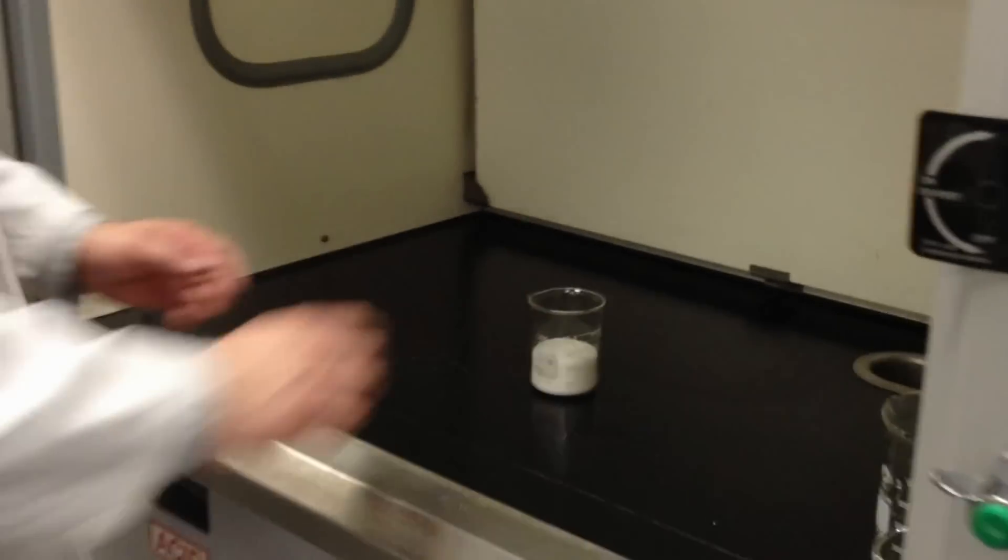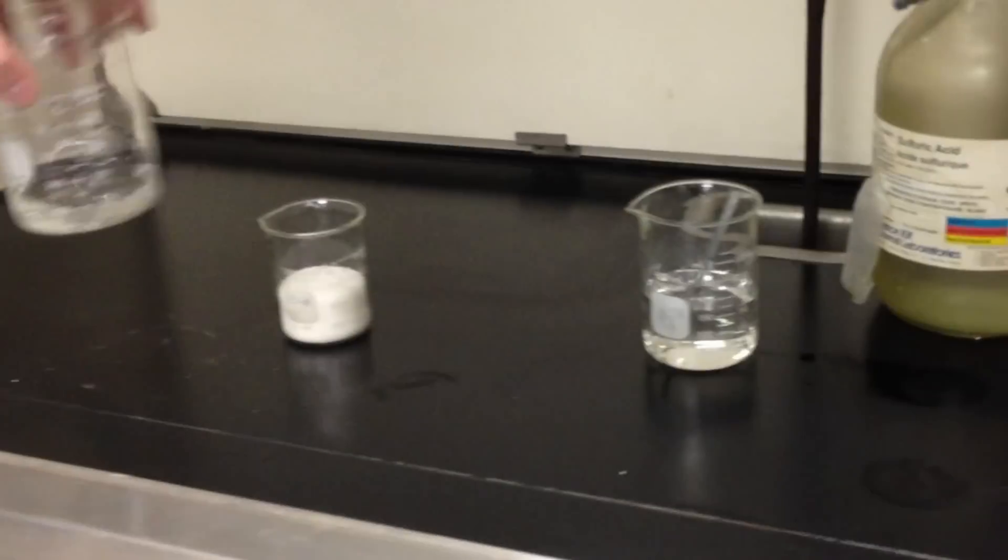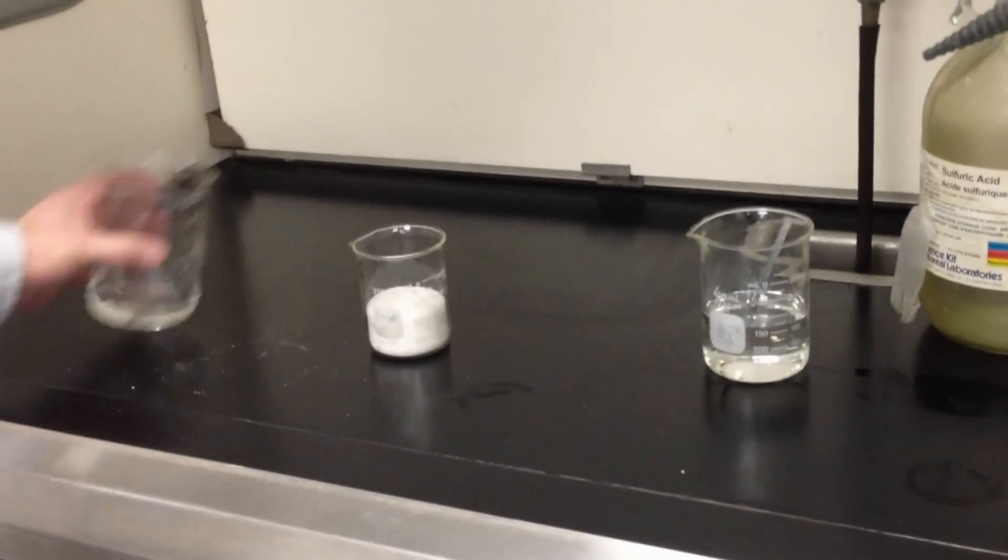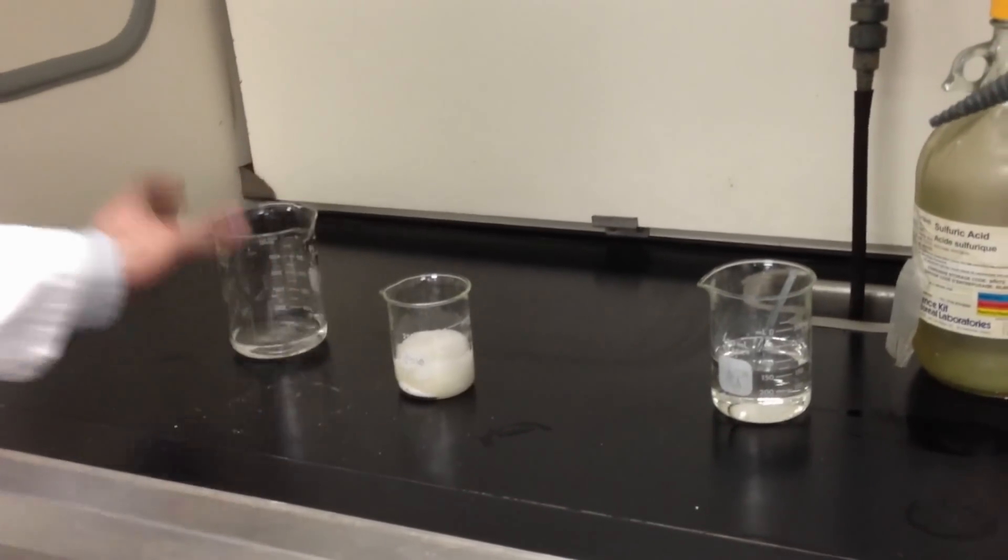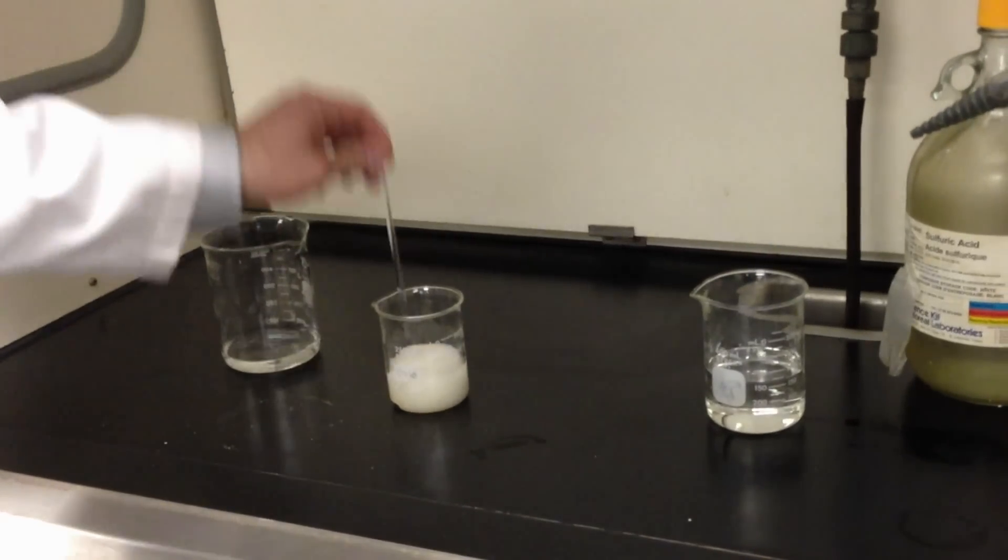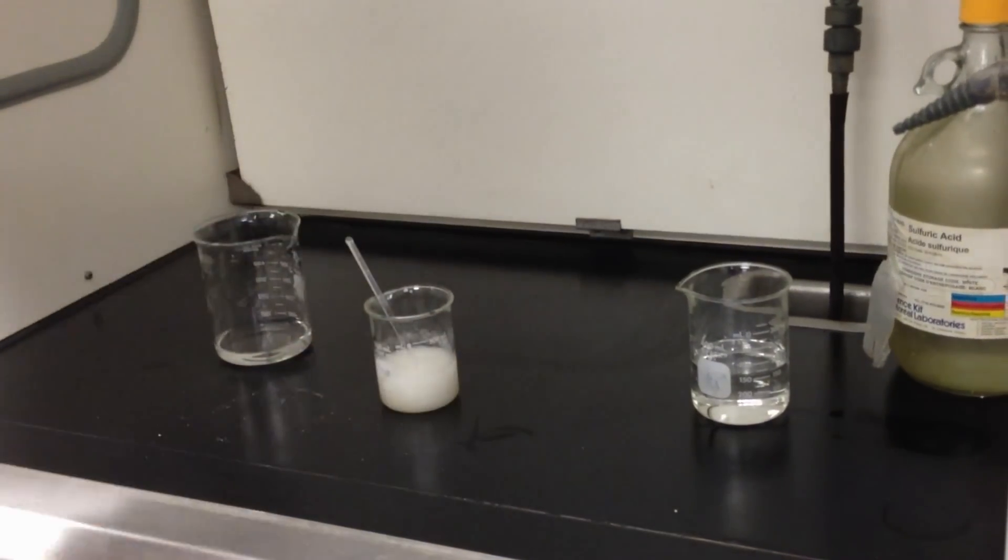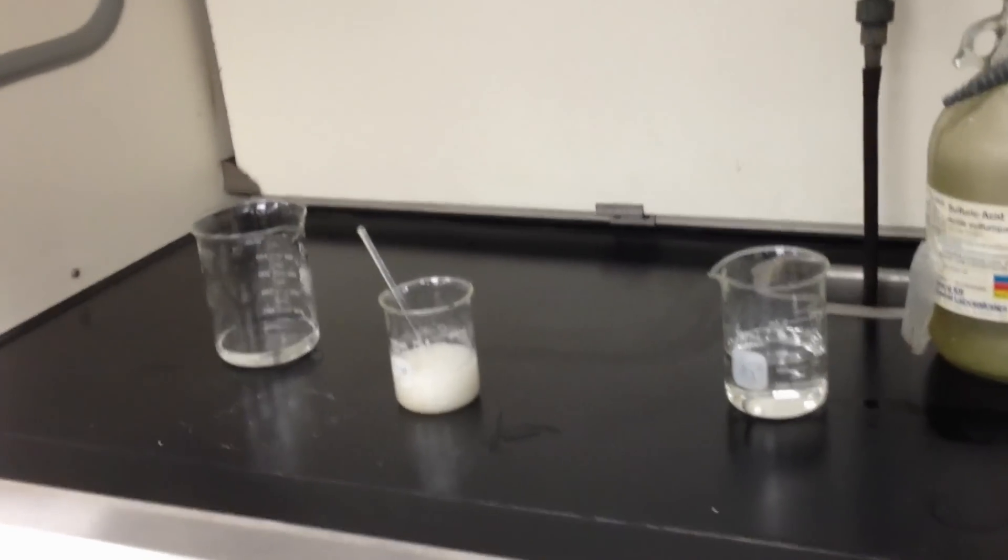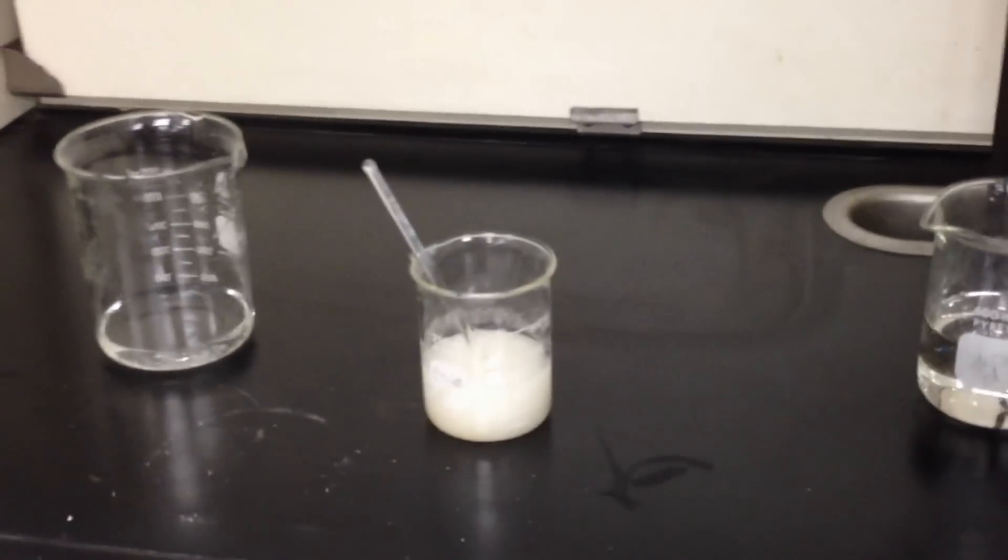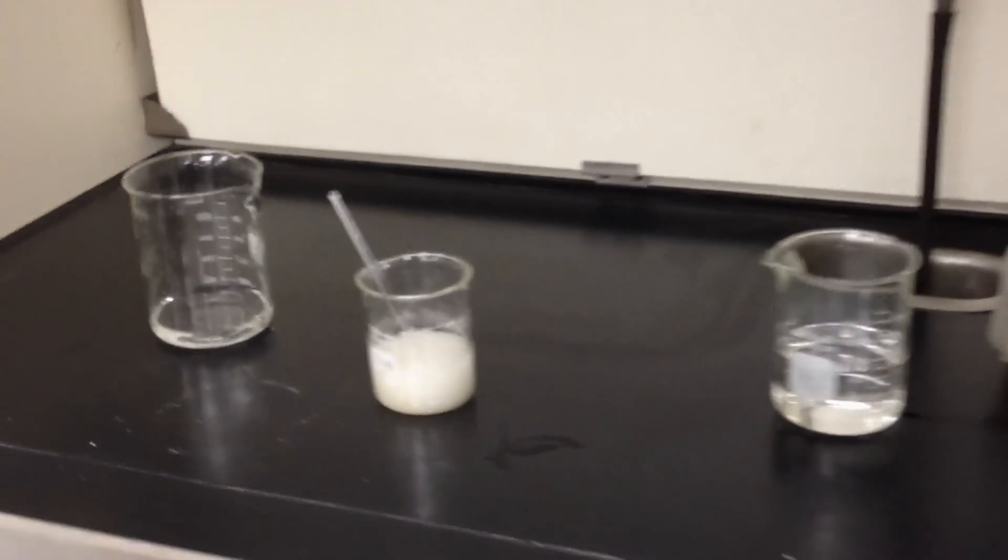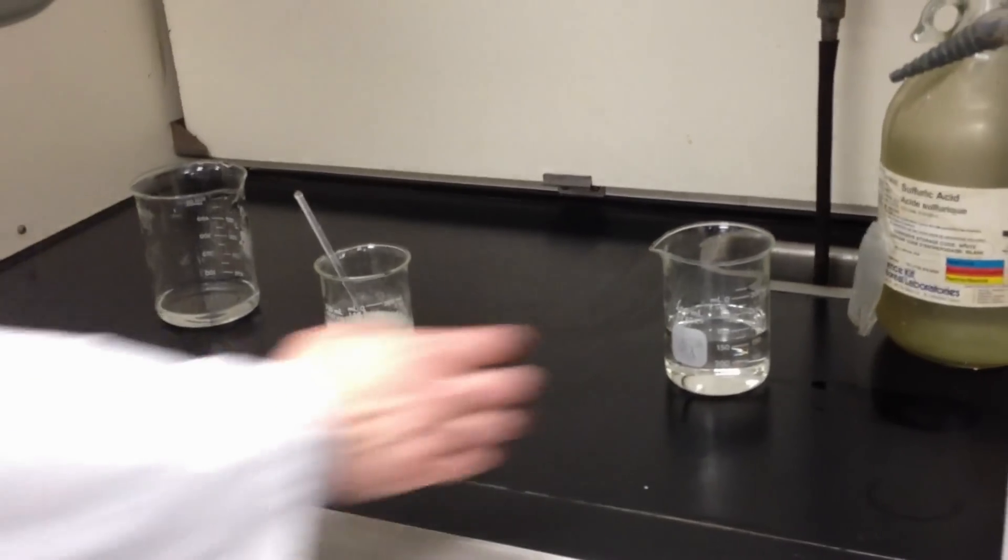Here is a sample of sucrose. Here is the sulfuric acid. We're going to wet the sugar a little bit so that it speeds up the reaction slightly. Stir it around. I'm just going to get my safety glasses, and we will add the sulfuric acid.